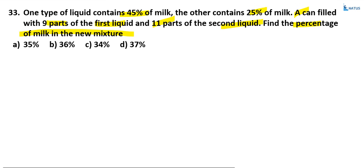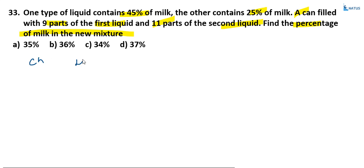Here one concept is the allegation and mixes concept. This is a very simple logic method. There are three variables: cheaper, dearer, and mean. Cheaper is the smallest value, dearer is the largest value, and mean is not arithmetic mean but lies between cheaper and dearer. Suppose cheaper is 10 and dearer is 20; mean is any value between 10 and 20.